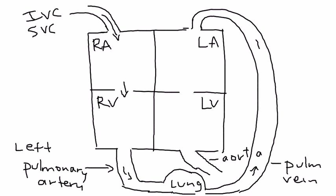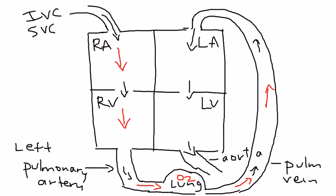The point of all this is that when blood comes back to the right side of the heart, it's deoxygenated. Then the blood goes to the lungs, picks up oxygen, and the oxygenated blood goes back to the left side of the heart, where it's pumped out via the aorta into the circulation so oxygen can travel to different parts of the body.